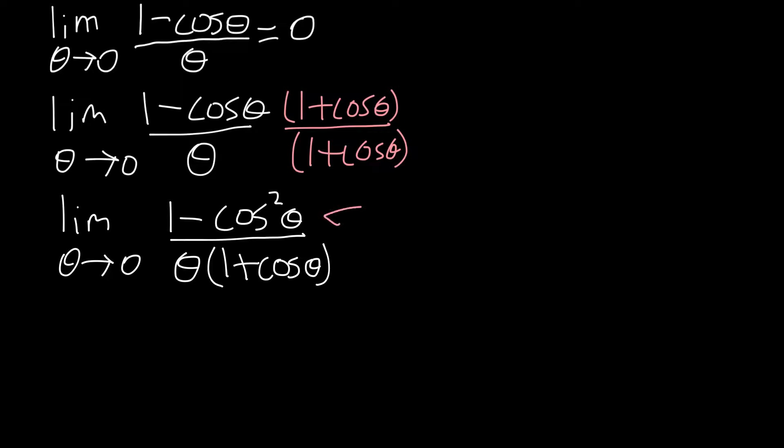This top part can be rewritten as minus sin squared theta. Now, that, of course, comes from the identity sin squared theta plus cos squared theta is 1. And so, when we rearrange that identity, we do find that the top can be substituted as minus sin squared theta.